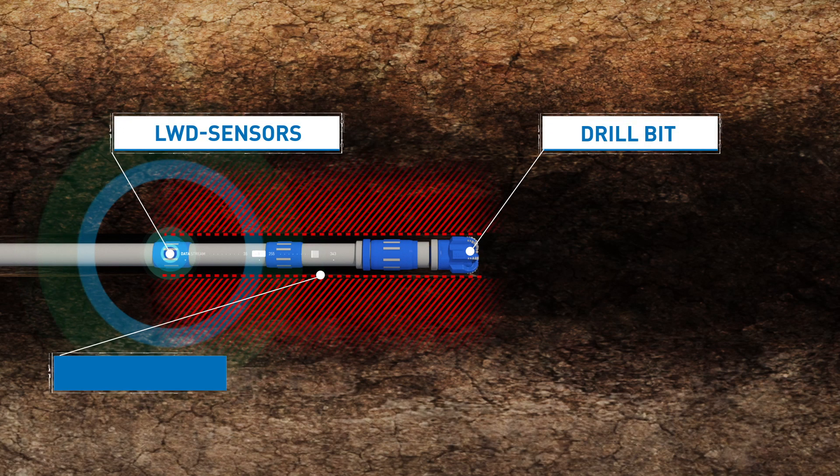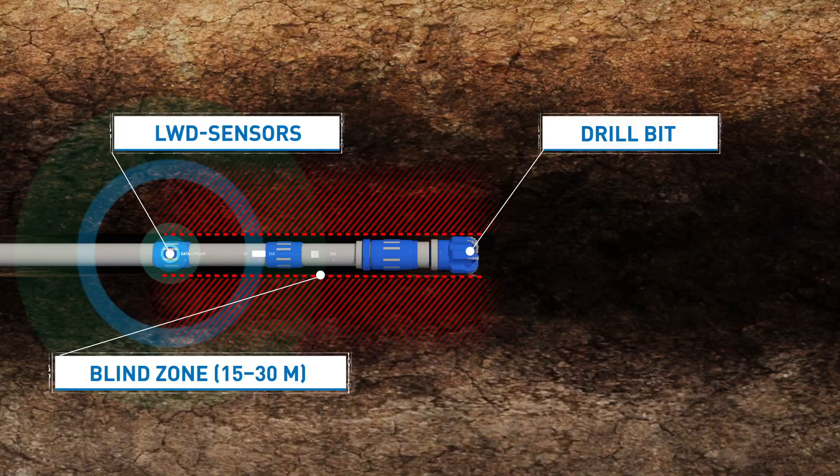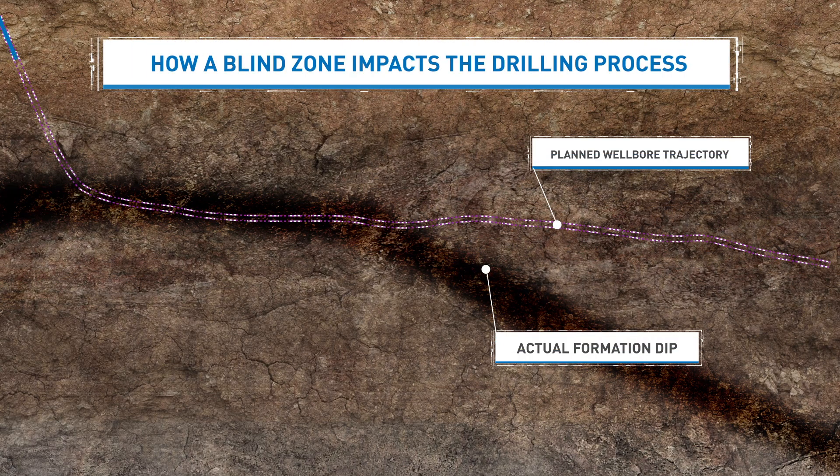Due to its design, this is located 15 to 30 meters away from the bit. These 30 meters give rise to a blind zone.